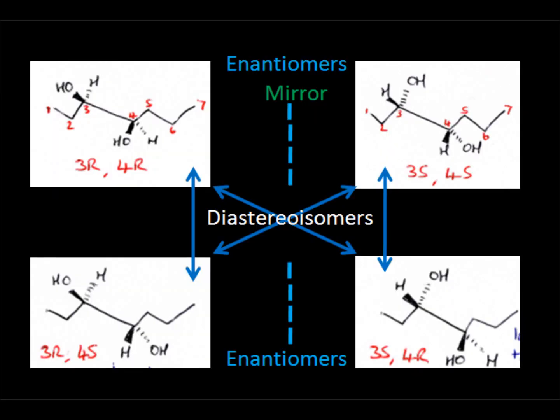So now let's classify our stereoisomers. The R,R and the S,S are a pair of enantiomers, non-superimposable mirror images, and so are the R,S and S,R. But what about our diastereoisomers? This would be R,R and R,S, and R,R and S,R. S,S and R,S, and S,S and S,R.